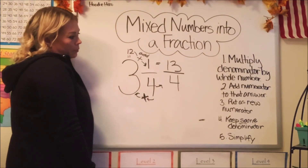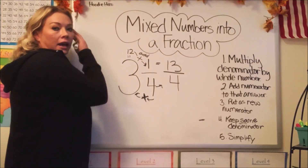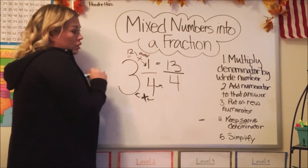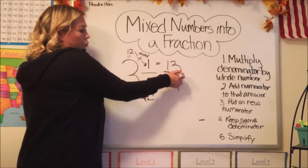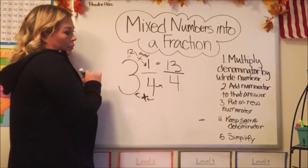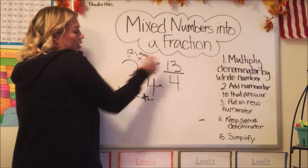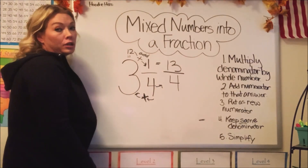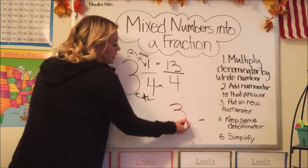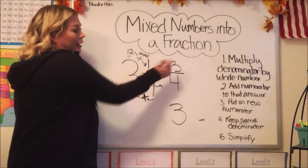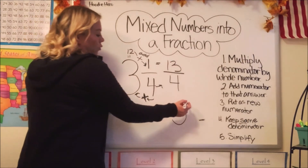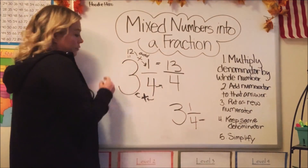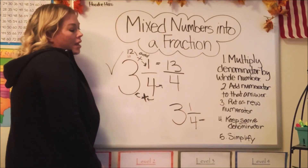Step six is simplify — we can't simplify that any further. This is obviously an improper fraction, but you could check your work by doing the reverse, turning the improper fraction into a mixed number, which would be dividing the denominator into the numerator. How many times could four go into 13? It can go three times because three times four is 12, and one is left over. We keep the same denominator — three and one-fourth. We did it. That's the first answer.